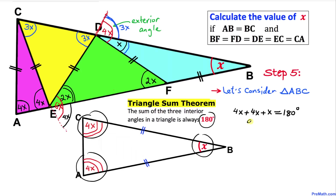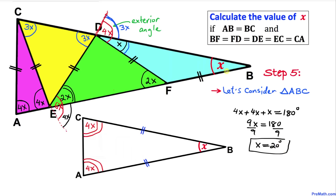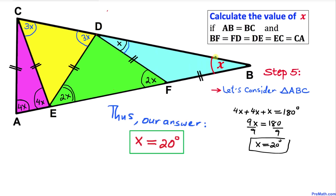So we write: 4X plus 4X plus X equals 180 degrees. On the left-hand side that gives us 9X equals 180. Dividing both sides by 9, X turns out to be 20 degrees. So our final answer is that angle X for triangle ABC is 20 degrees. Thanks for watching and please don't forget to subscribe to my channel for more exciting videos.